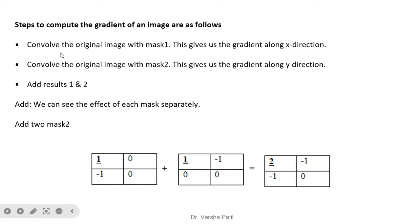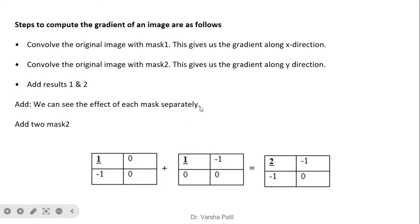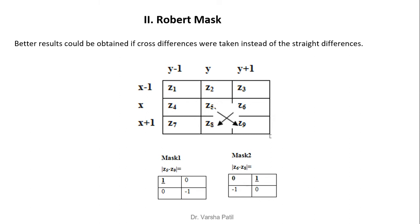We can convolve the original image with mask 1 to get the gradient along the x direction (horizontal edges), or convolve with mask 2 to get vertical edges. If we want both edges, we can add the masks first and then apply them to the image. The choice depends on whether we want to detect edges separately or simultaneously.